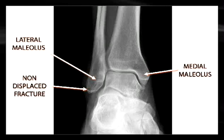This avulsion fracture is likely the result of a history of severe inversion. The ligaments attaching there could be either the anterior talofibular or the calcaneofibular ligaments, depending on the history and which one is sensitive to local palpation. Typically, if it's non-displaced as this one is, you don't need to do much other than ensure it doesn't come loose and allow it to mobilize for a while.